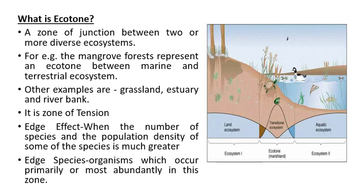Next comes ecotone. It is a zone of junction between two or more diverse ecosystems. For example, the mangrove forests represent an ecotone between marine and terrestrial ecosystems. Other examples include grassland, estuary, and riverbank. Ecotone is also known as the zone of tension.